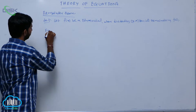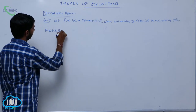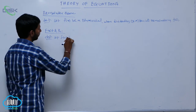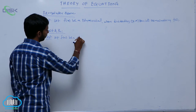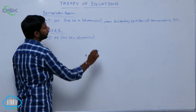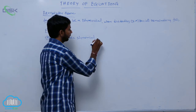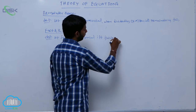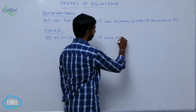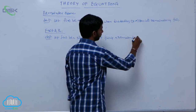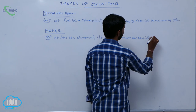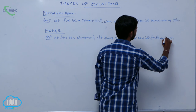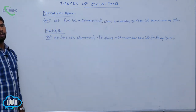Factor theorem: Let f of x be a polynomial. If and only if f of a is zero, then its factor is x minus a. Thank you.